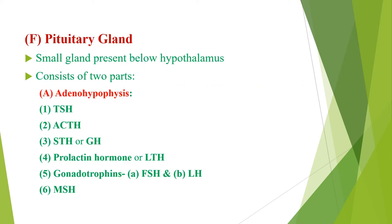Next is the pituitary gland — a small gland present below the hypothalamus and connected with the hypothalamus by the infundibular stalk. The pituitary gland consists of two parts: adenohypophysis and neurohypophysis. The adenohypophysis secretes the following hormones. First is TSH (thyroid stimulating hormone), which increases iodine uptake, synthesis of thyroxin, and breakdown of thyroid follicles to release thyroxin.